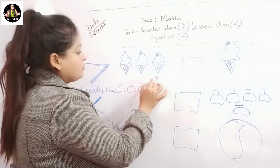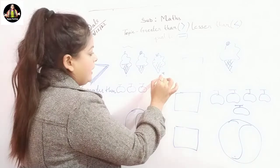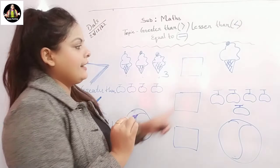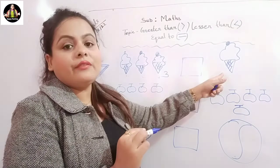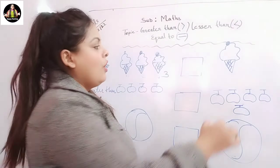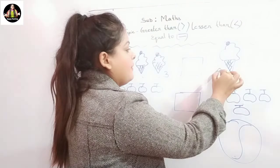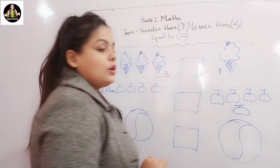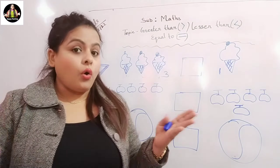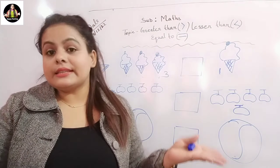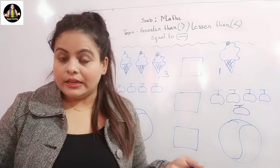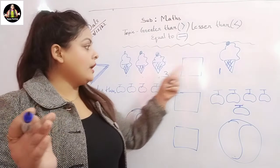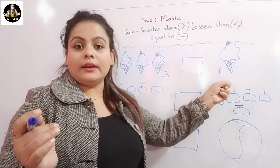One, two, three. Let's write three. And here, how many do we have? Only one. So, which ice cream does the alligator want to eat? This one or this one?